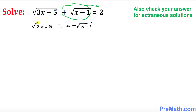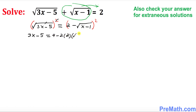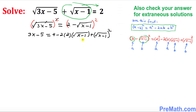Next, get rid of this square root by squaring both sides. The square and square root undo each other, so we end up with 3x minus 5 equals — using the fact that (a minus b) squared gives 4 minus 2 times 2 times square root of x minus 1, plus square root of x minus 1 squared.